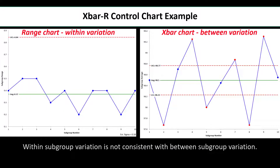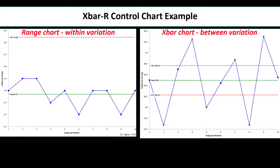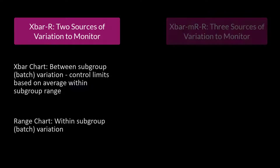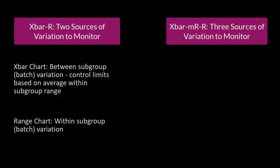So what happened? There is very little variation within a batch — the average range is only 0.37. But the batch averages vary a lot. Since the average range is used for control limit calculations on the X-bar chart, the limits are very tight and everything looks out of control. The within subgroup (within batch) variation is not consistent with the between subgroup (batch) variation. So how do you handle this? We're going to change the variation we're looking at.